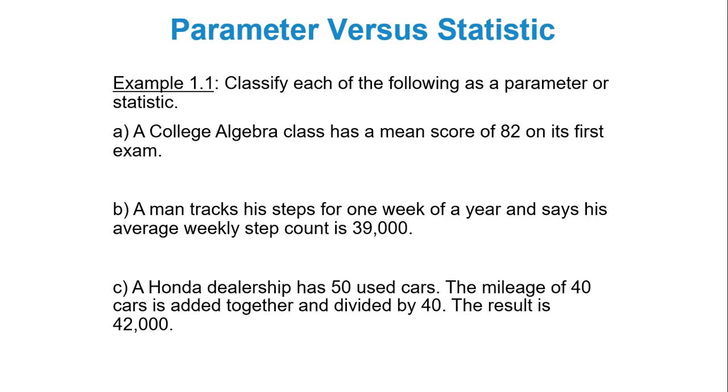So classify each of the following as a parameter or statistic. You have a college algebra class. That's what's being taken into consideration here. And that class has a mean score of 82 on its first exam. So you have your numeric descriptor here, this 82. To find that 82, they used everybody in that class. They took everyone's exam score and found the average. As a result, because everyone in the class was used, this 82 represents the entire population. Everyone was used. So we have a parameter.